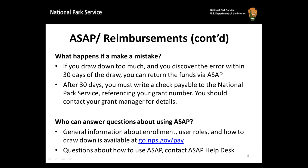If you make a mistake and draw down too much money, you have two ways to return the funds depending on when the error is discovered. If the error is discovered within 30 days of the draw, you can essentially reverse the action using ASAP. If it is greater than 30 days since the improper draw was made, you must write a check payable to the National Park Service putting your grant number on the memo line. You should contact your grant manager before doing this and should not mail the check using the US Postal Service because our mail is irradiated.